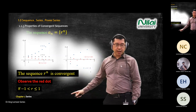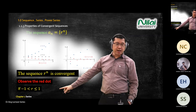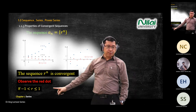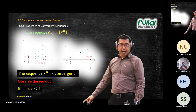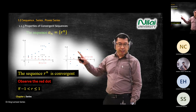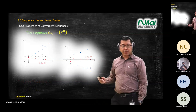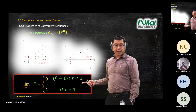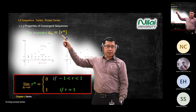Be careful on the notation: r must be strictly greater than minus one — r cannot equal minus one. If r equals minus one, the sequence cannot converge. This is still testing your understanding of convergence.